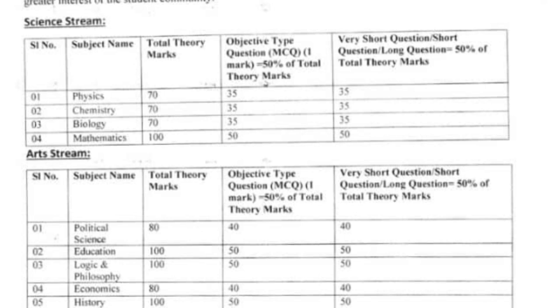Next, Chemistry is also 70 marks. For Chemistry, MCQ is 35 marks — that is 50% — and the remaining 35 marks cover other question types. Biology follows the same pattern.